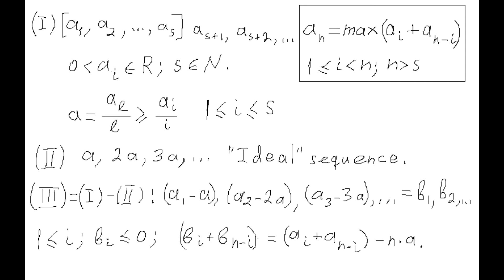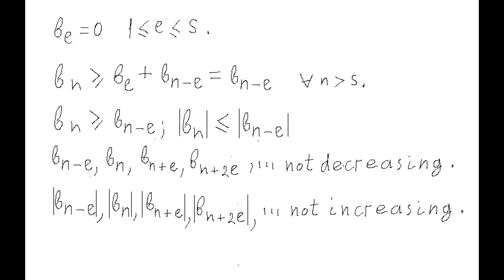Now we will prove that the winners for the third sequence are those members b_1, b_2, up to b_s whose values are zeros, which will prove that the corresponding members a_1, a_2, up to a_s in the first sequence are also winners. It is easier to prove for the third sequence because we work with zeros and all members b_i are zero or negative. By definition, for each n greater than s, b_n is not less than b_l plus b_{n-l}. Since b_l equals zero, we have b_n is not less than b_{n-l}. So the sequence b_{n-l}, b_n, b_{n+l}, b_{n+2l}, etc. is not decreasing, and therefore the sequence of their absolute values is not increasing.